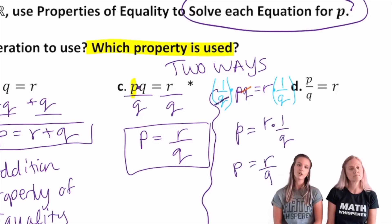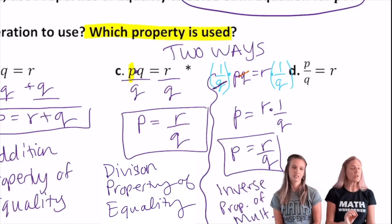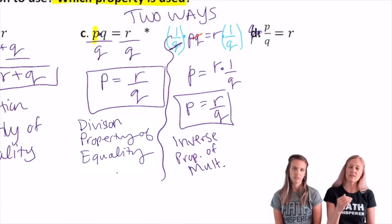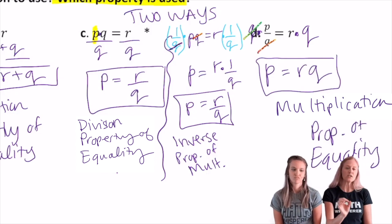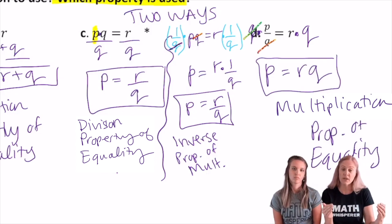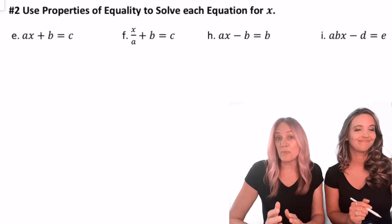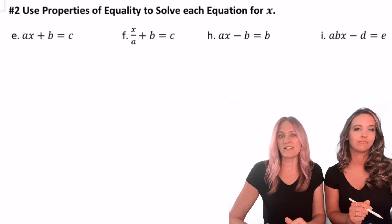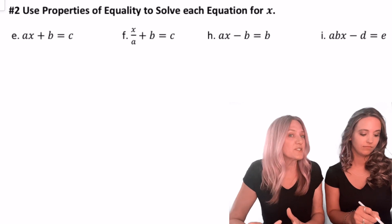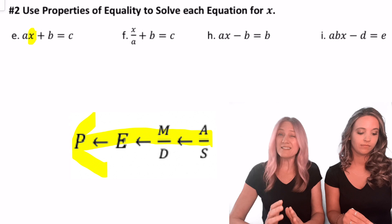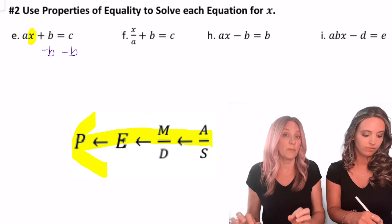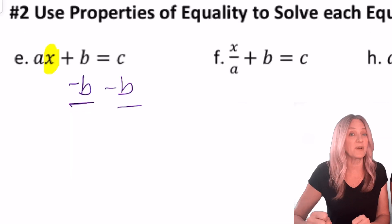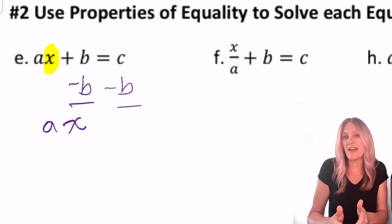If I do that, p equals r times 1 over q, which is just r over q. For p divided by q equals r, we want to undo the division by multiplying — multiplication property of equality — multiply by q on both sides, and we get p equals r times q, or q times r, because multiplication is commutative. Now let's practice the properties of equality by solving each equation for x. Working backwards through PEMDAS, let's undo add or subtract first. I see plus b, so I'll subtract b from both sides using the subtraction property of equality.